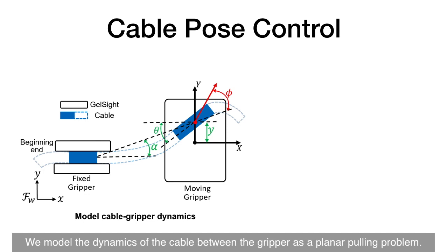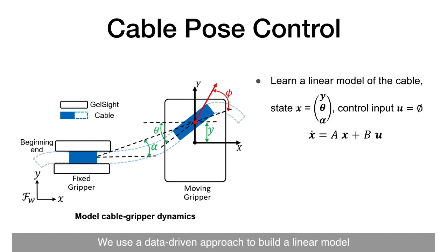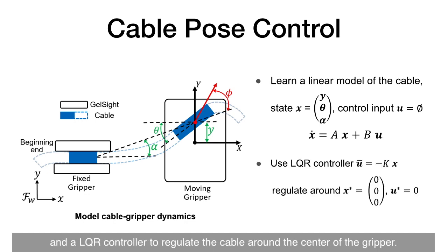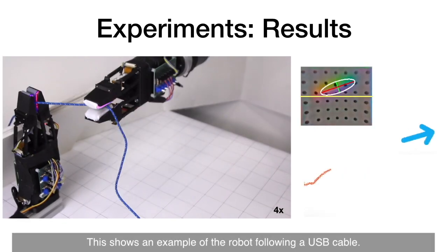We model the dynamics of the cable between the gripper as a planar pulling problem. We use a data-driven approach to build a linear model, and an LQR controller to regulate the cable around the center of the gripper.